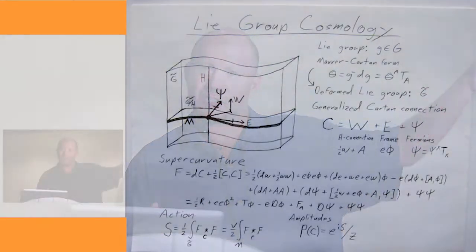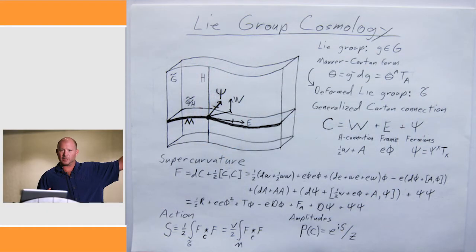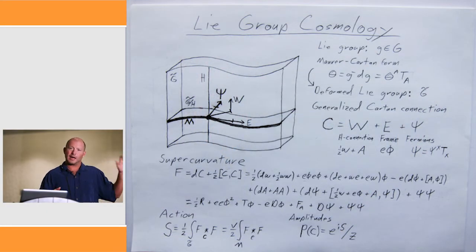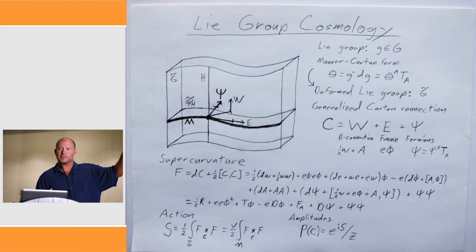But you don't allow just any deformations of the manifold. What you do is you maintain the integrity of a subgroup H of your original Lie group G, and allow the manifold to deform over a coset space G mod H.